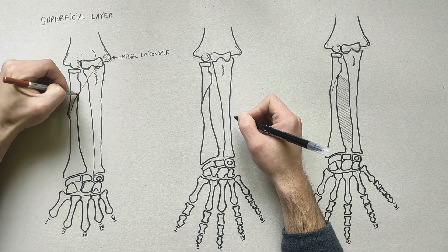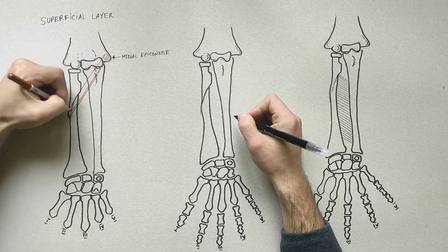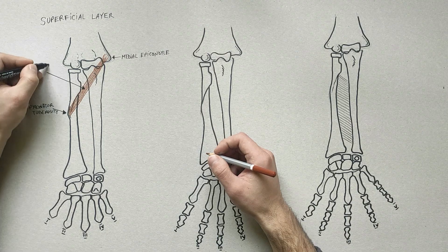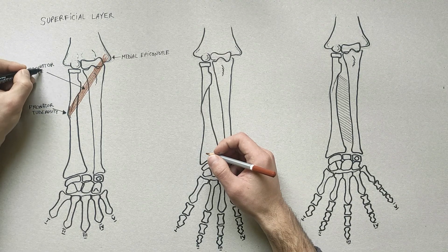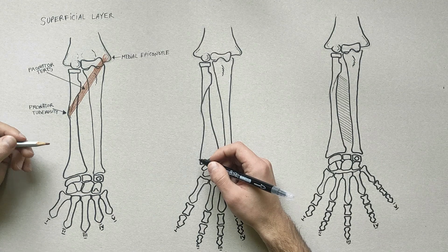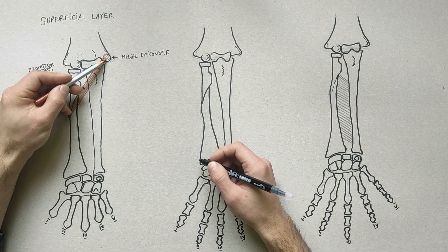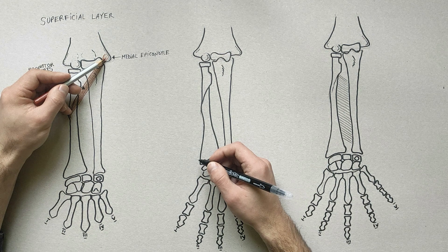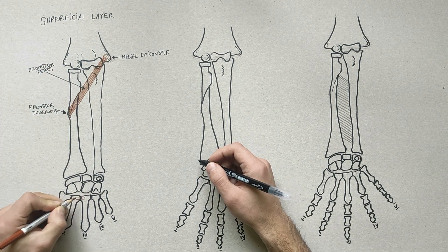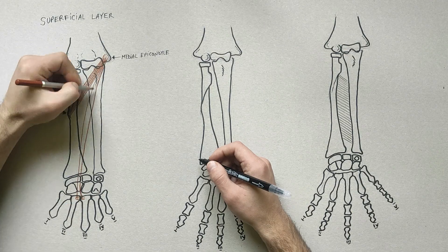The insertion of pronator teres is into the pronator tuberosity, located about the center of the lateral surface of the body of the radius. The next muscle is flexor carpi radialis. Its origin is from the medial epicondyle of the humerus, and its insertion is on the base of the second and third metacarpal bones.